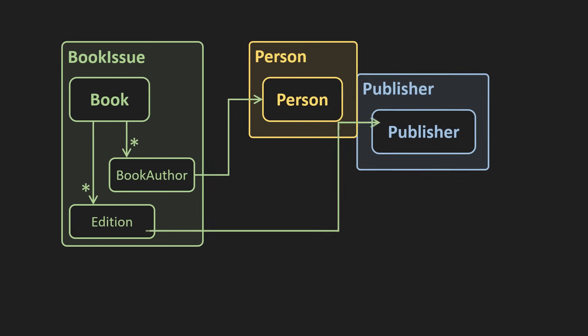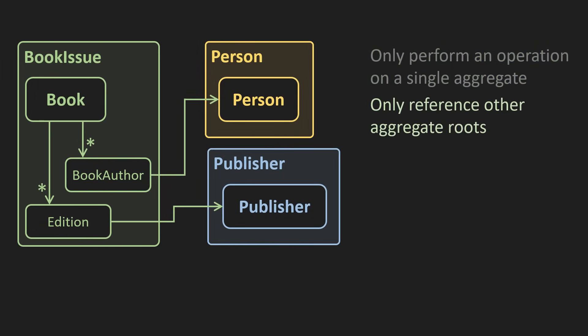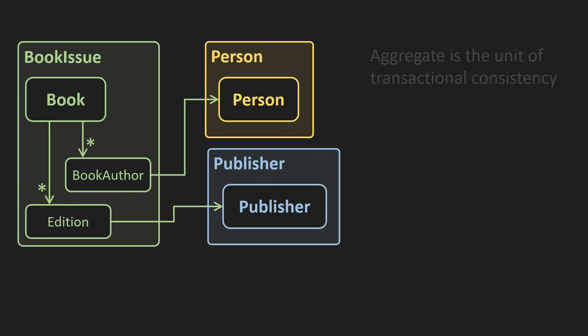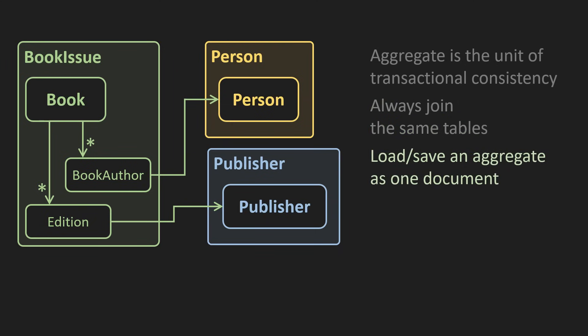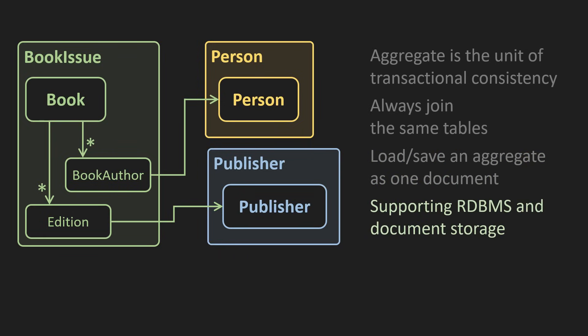Every operation becomes a consistent operation on a single aggregate. All references are to another aggregate's root — an entity designated the root position in the group of related entities and values. This revolutionary idea addresses two burning issues. One is transactional consistency, as DDD posits that we only make updates to one aggregate at a time and commit them as one atomic transaction. The other is removing a heavy burden off our backs. We know how to join tables in a relational database or load data from a document store: always join all the entities from one aggregate, always store one aggregate as one document. The worst part of dealing with relational databases — choosing the right joins for each operation — is now gone, and document storage just received a proper universal definition of the document.